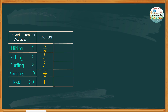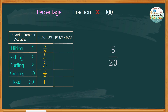Let's add another column for the percentage. To find the percentage, we only need to multiply the fraction of each category by 100. Let's start with hiking. With a fraction of 5 over 20, times 100, we can do cross cancellation by dividing 100 by 20, where we get 5. Now we have 5 times 5, giving a product of 25, or 25%.